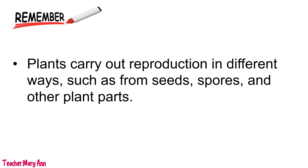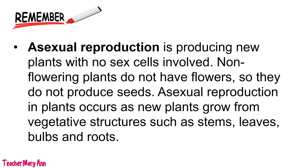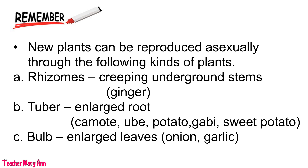Remember kids, plants carry out reproduction in different ways, such as from seeds, spores, and other plant parts. Asexual reproduction is producing new plants with no sex cells involved. Non-flowering plants do not have flowers, so they do not produce seeds. Asexual reproduction in plants occurs as new plants grow from vegetative structures such as stems, leaves, bulbs, and roots. New plants can be reproduced asexually through the following kinds of plants.